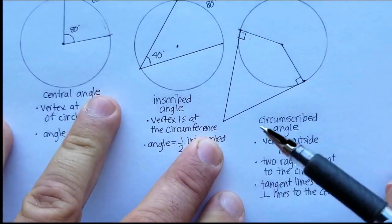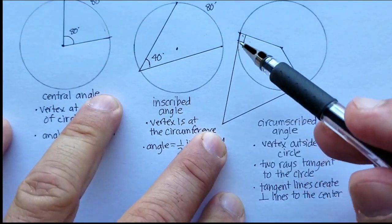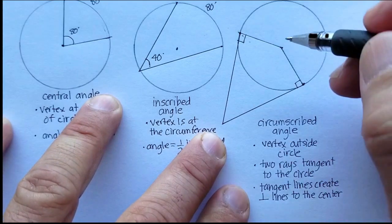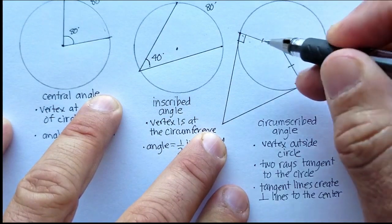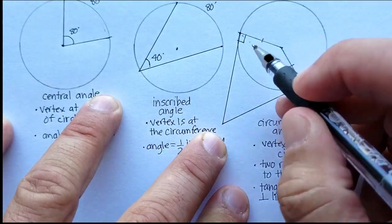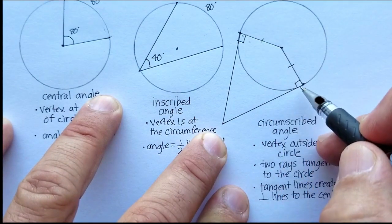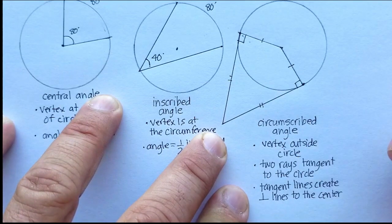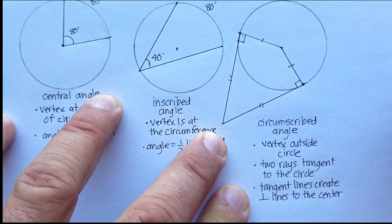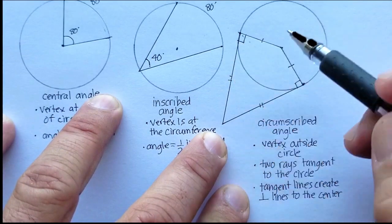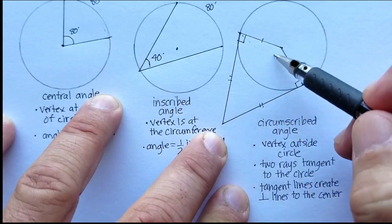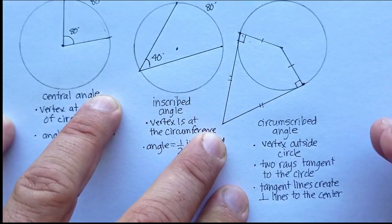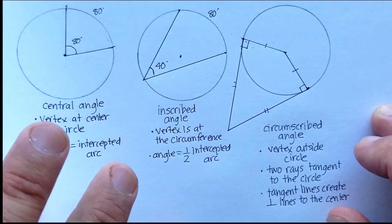This circumscribed angle also forms a four-sided figure called a kite. A kite has two consecutive congruent lines — this segment and the next are congruent, and then the following consecutive line is also congruent. In a kite, the opposite angles are always supplementary.